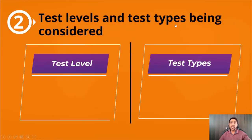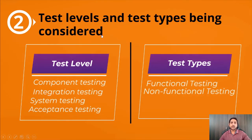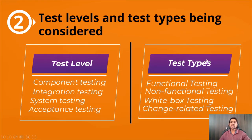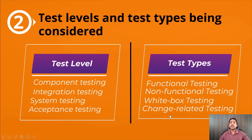The second factor is test levels and test types being considered. We will cover test levels and test types in detail in chapter two. At the component level, integration testing level, system testing level, or acceptance testing level, the way you test will change and you have to select the test process accordingly. Similarly, when performing functional testing, non-functional testing, white box testing, or change-related testing, your approach is different — that's why test level and test type influence the test process.